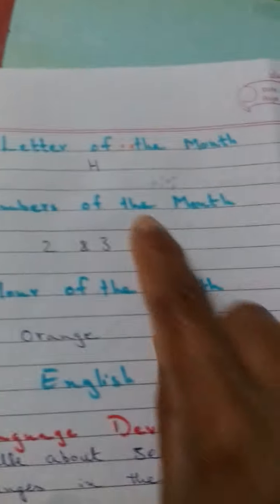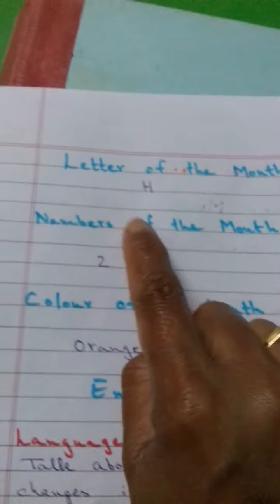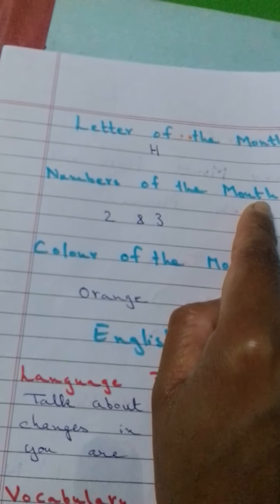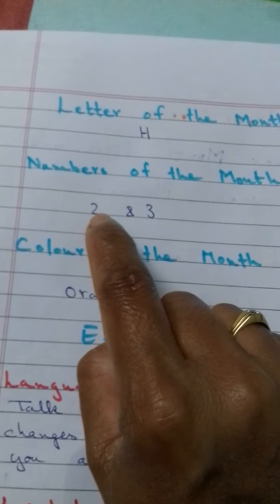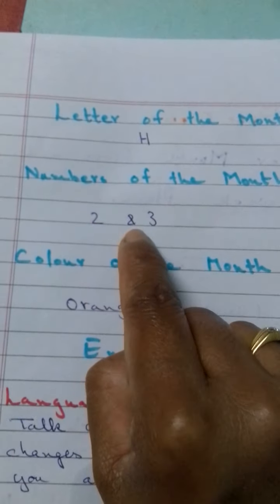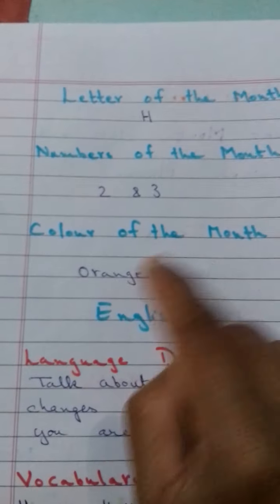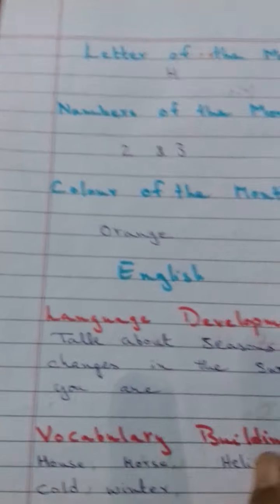Letter of the month is H. Numbers of the month are 2 and 3. Color of the month is orange.